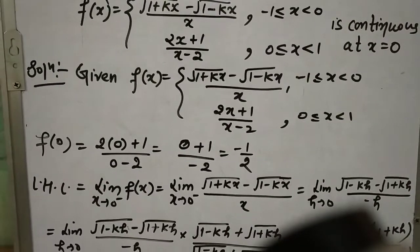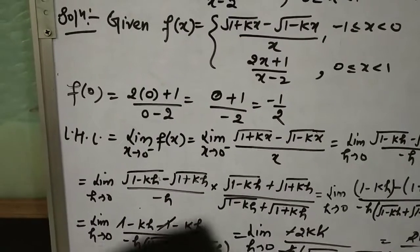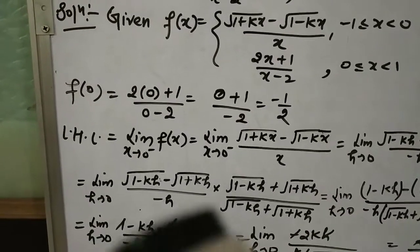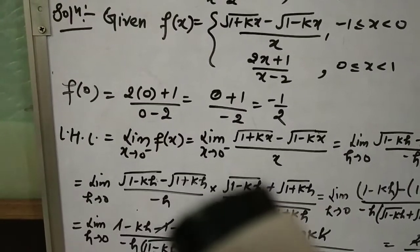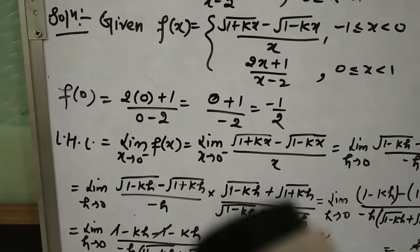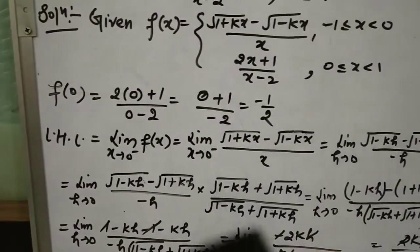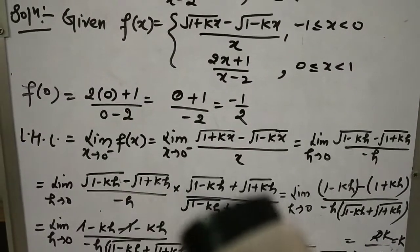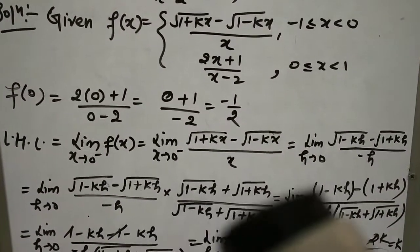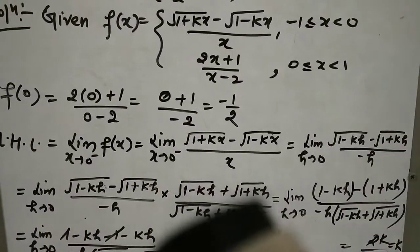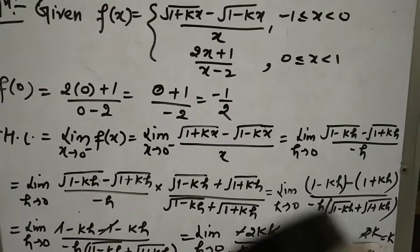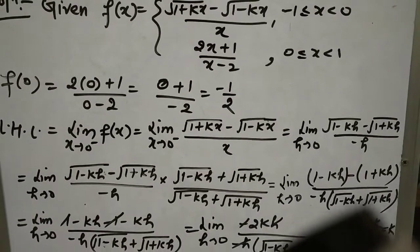Indeterminate form को खत्म करने के लिए rationalize करना पड़ेगा। Limit h→0: [√(1-kh) minus √(1+kh)] divided by (-h). इसको √(1-kh) + √(1+kh) से multiply और divide करेंगे। ऊपर formula a²-b² apply होगा: (1-kh) minus (1+kh), नीचे: (-h)(√(1-kh) + √(1+kh))।